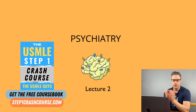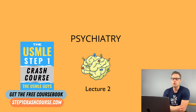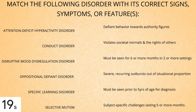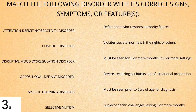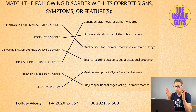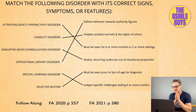Welcome back to the next lecture. We're going to start this one with a matching exercise to test your knowledge of childhood and early onset disorders. I want you to hit the pause button, figure this one out, and then come on back when you think you've got everything correct. Let's take a look at some of the high yield childhood and early onset disorders that you're likely to see on exam day — Step 1, Step 2, and Step 3.